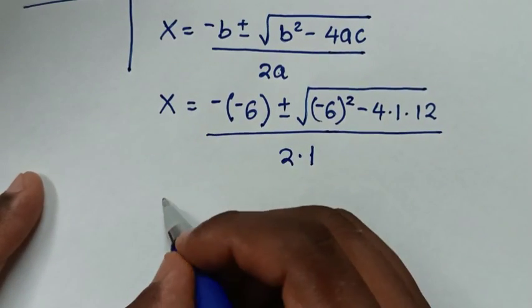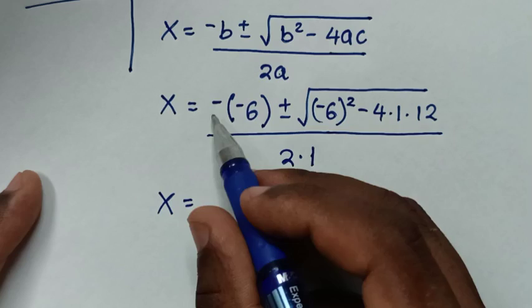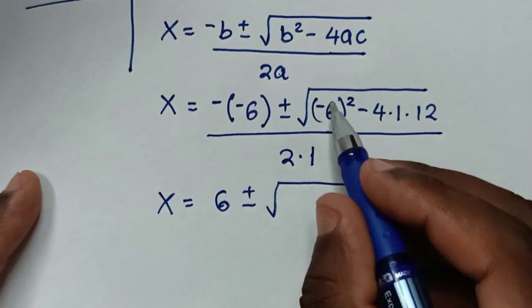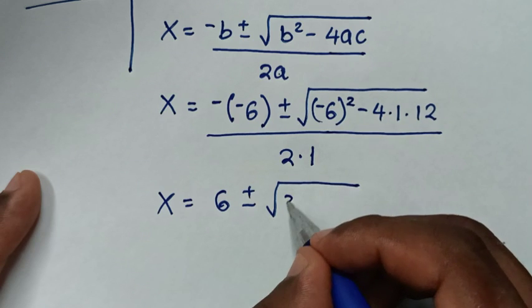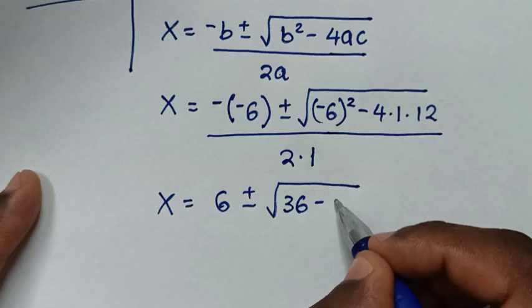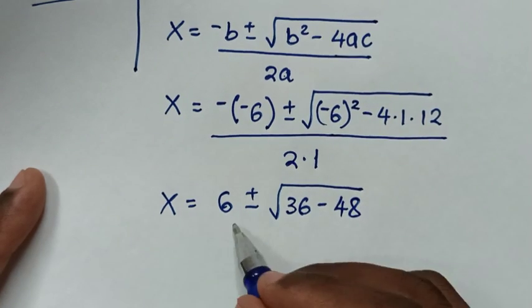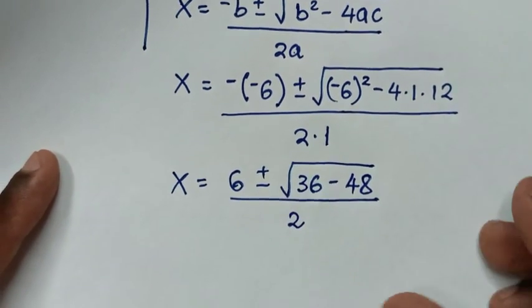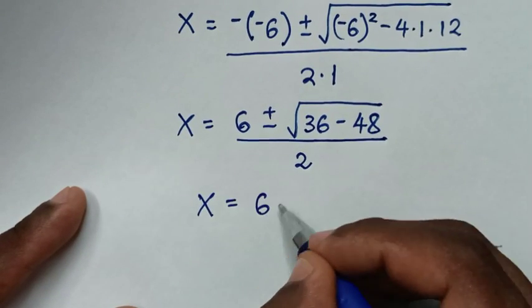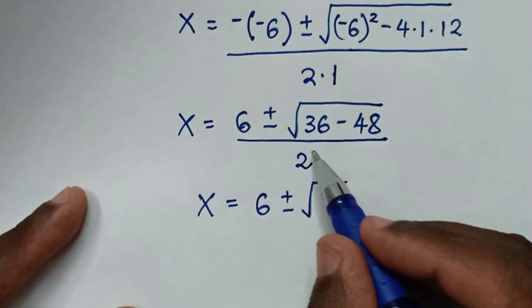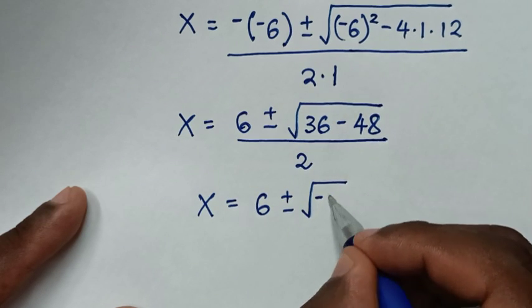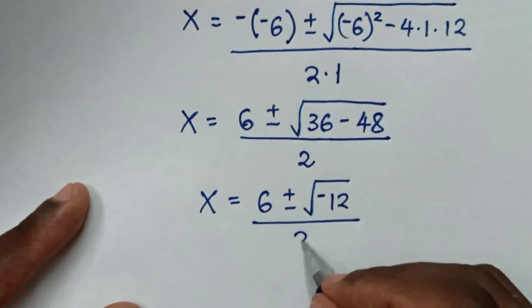In the next step: x = 6 ± √(36 - 48) / 2. (-6)² = 36, and 4 × 12 = 48, so 36 - 48 = -12. Therefore x = (6 ± √(-12)) / 2.